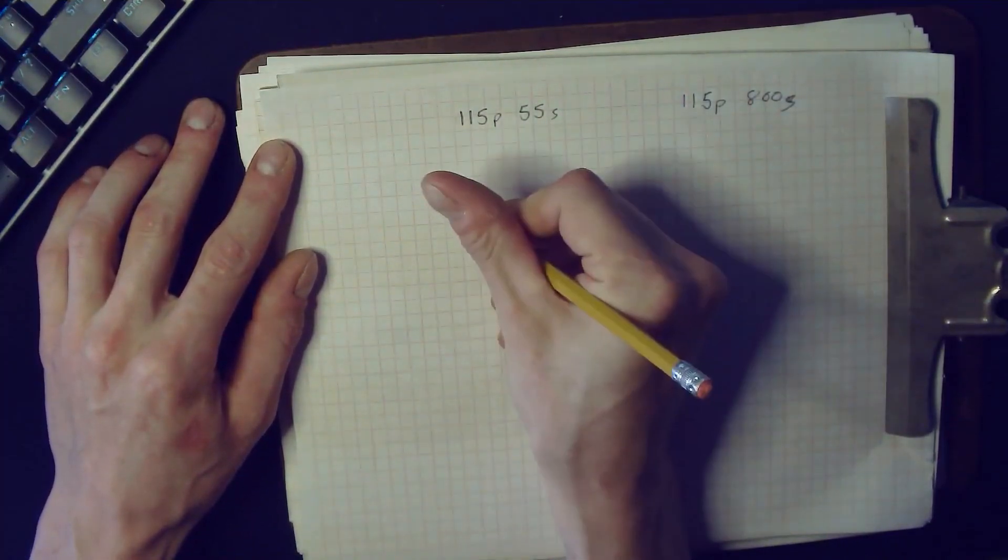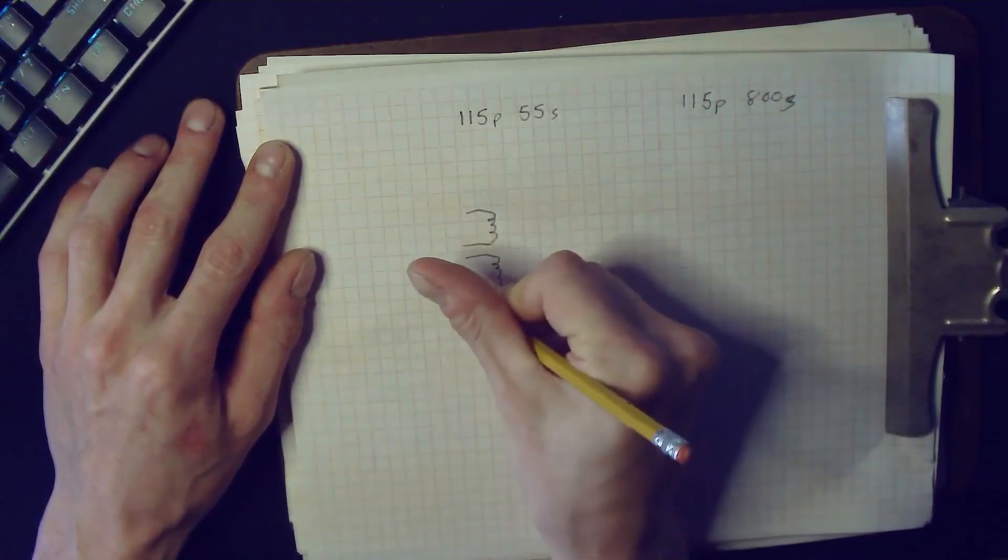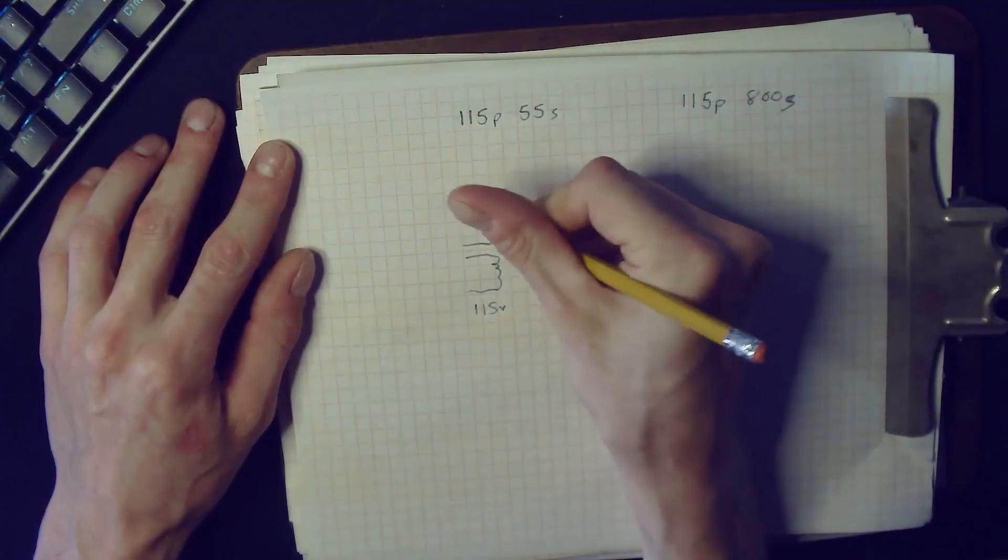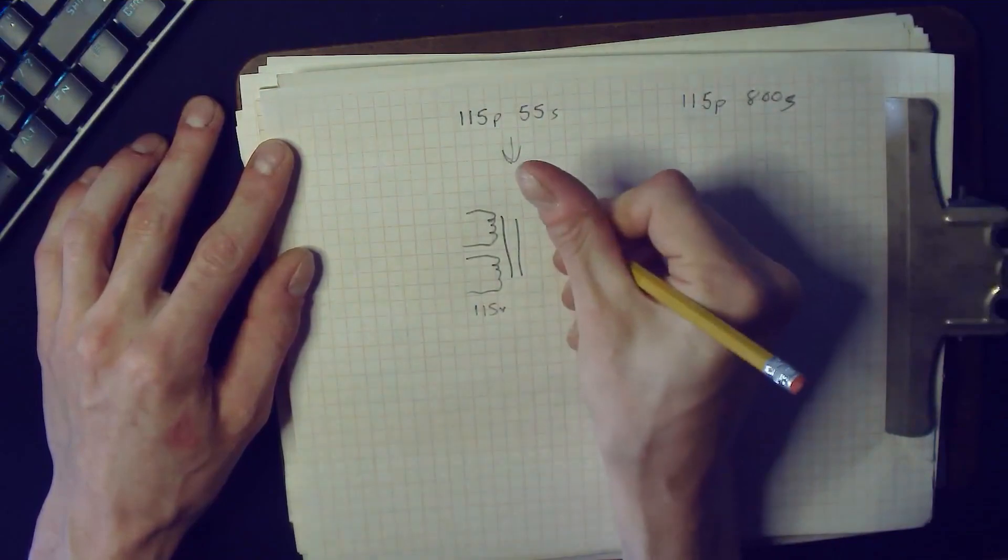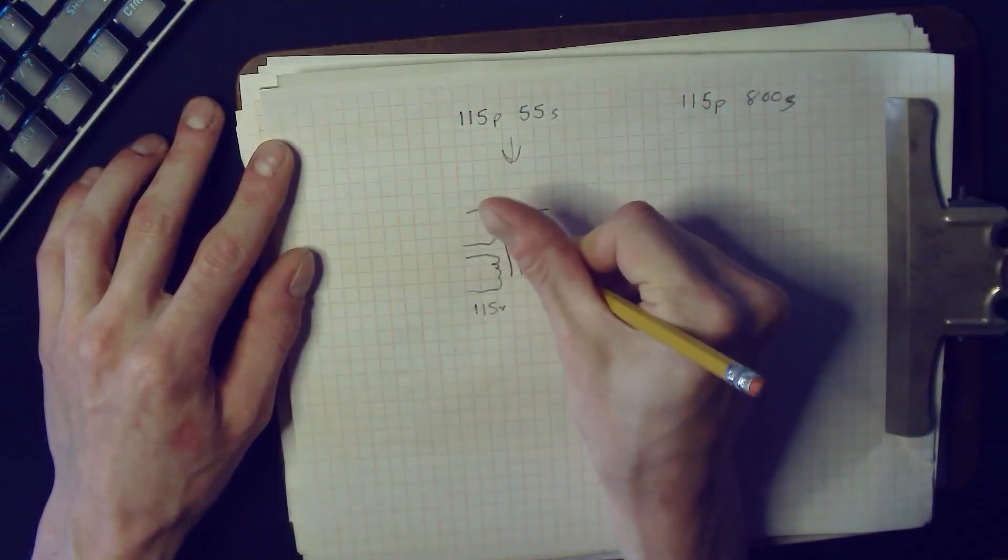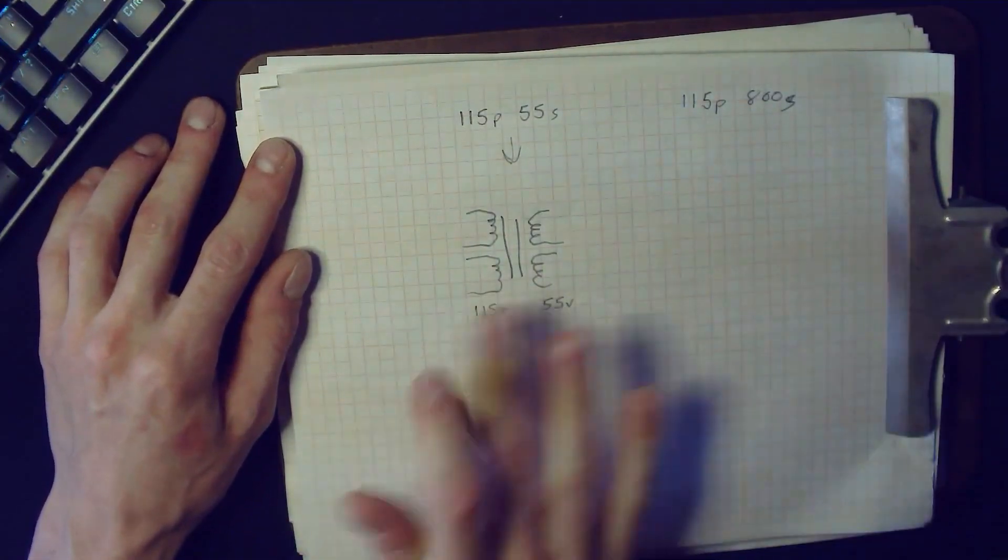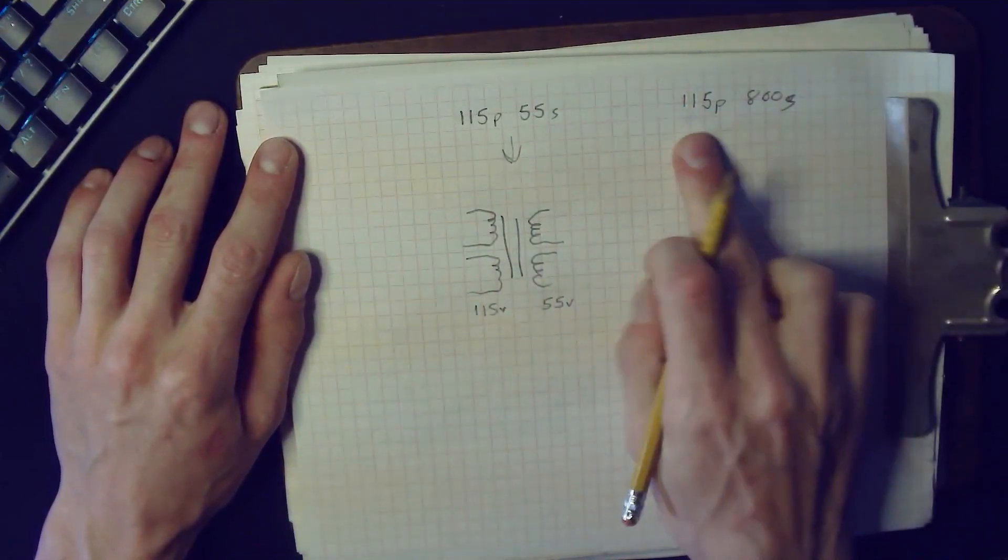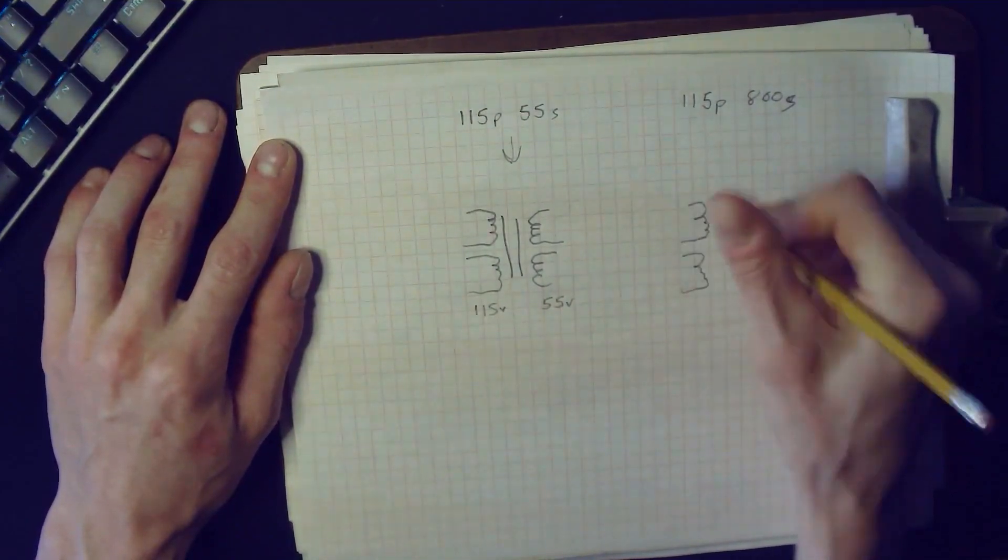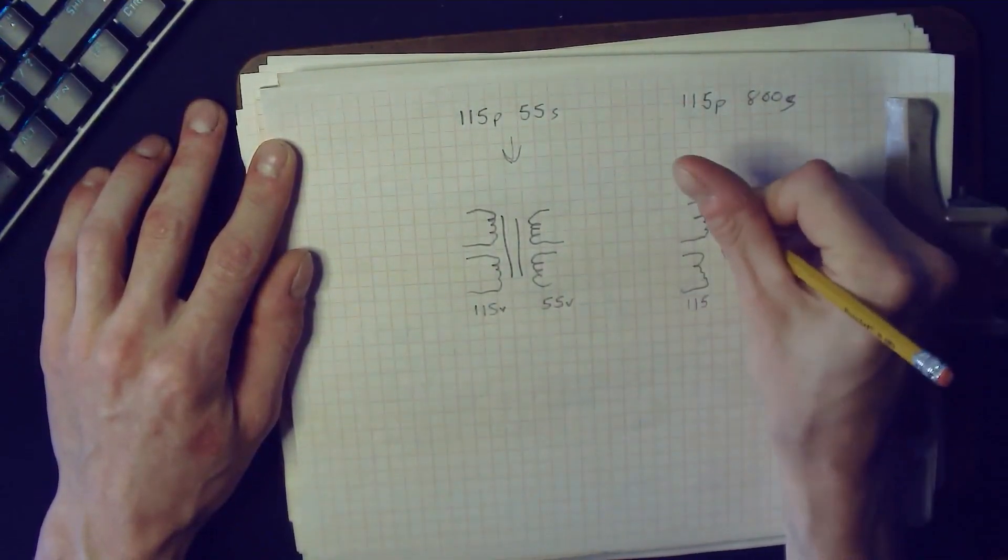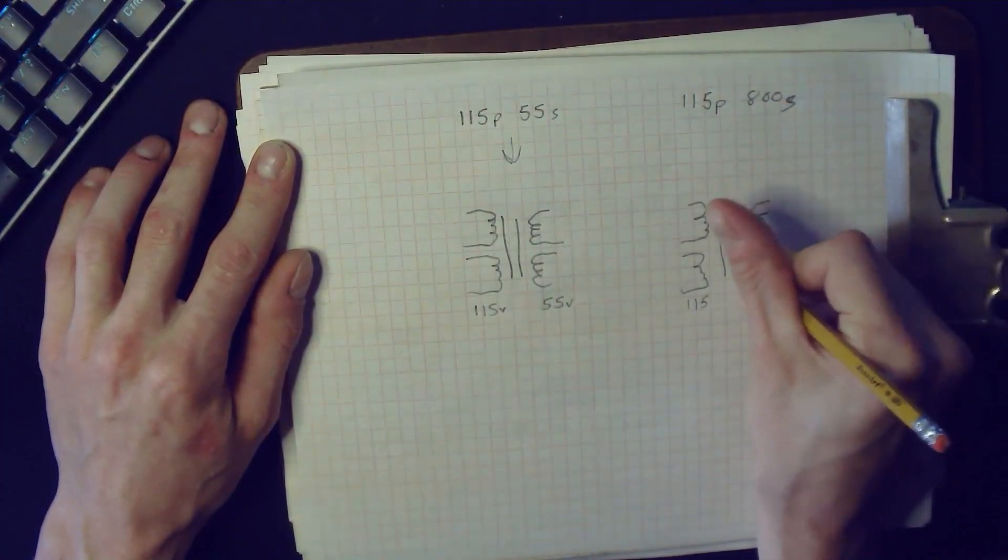Now both of these transformers have dual windings on both primary and secondary, so I'm going to draw them like this. The first transformer, we have two sets of 115 volt windings. On the secondary side of this transformer, we have two sets of 55 volt windings. Same thing with this transformer: two sets of 115 volt windings and two sets of 800 volt windings.